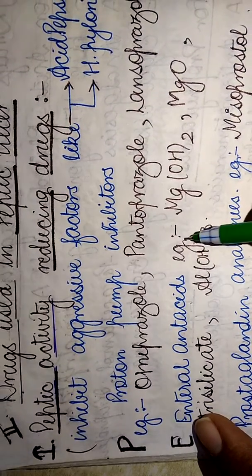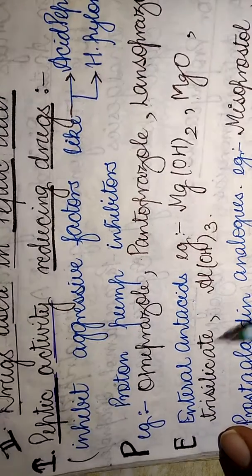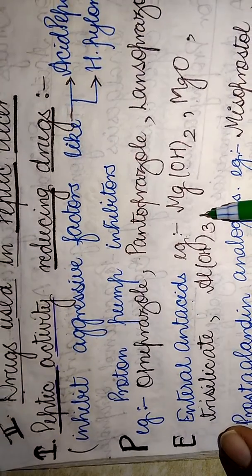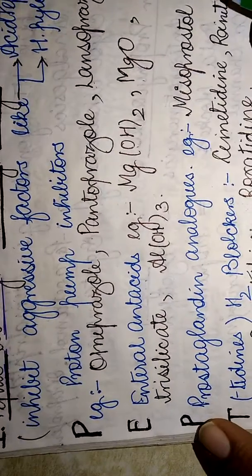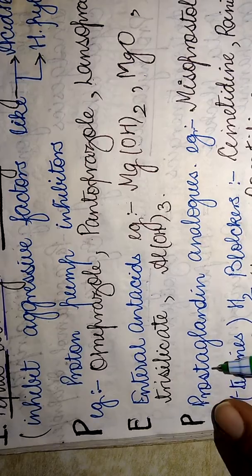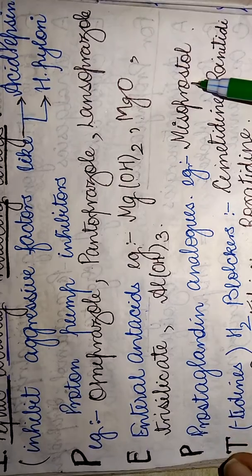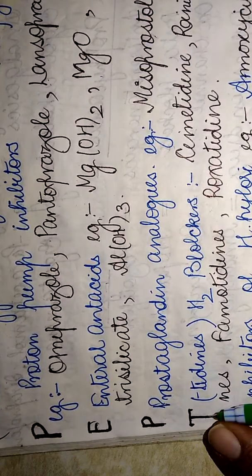Which includes magnesium hydroxide, magnesium oxides, trisilicates, and aluminum hydroxide. The next P for PEPTIC we have the prostaglandin analog drugs. The most common example is misoprostol.